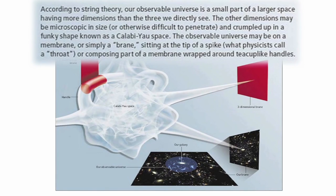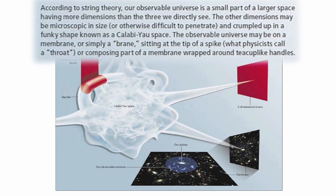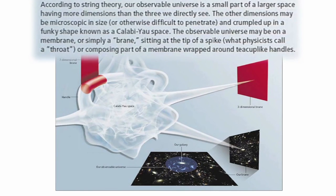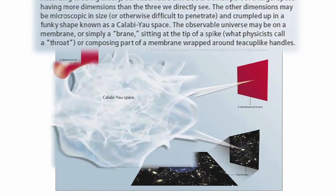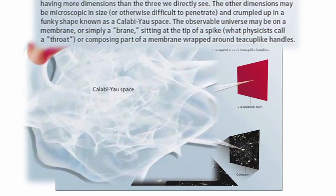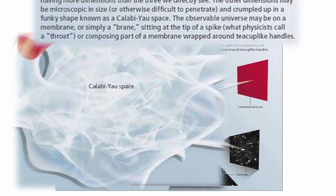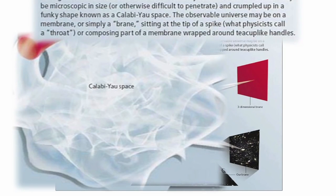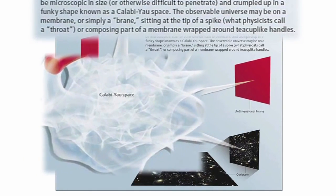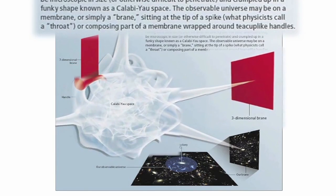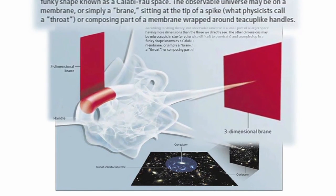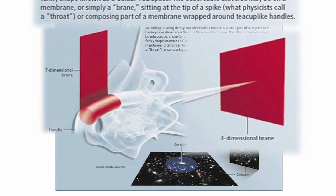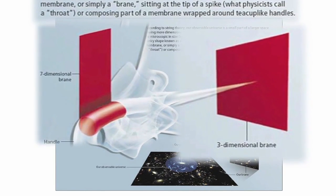According to string theory, our observable universe is a small part of a larger space having more dimensions than the three we directly see. The other dimensions may be microscopic in size, or otherwise difficult to penetrate, and crumpled up in a funky shape known as a Calabi-Yau space. The observable universe may be on a membrane, or simply a brane, sitting at the tip of a spike, what physicists call a throat, or composing part of a membrane wrapped around teacup-like handles.